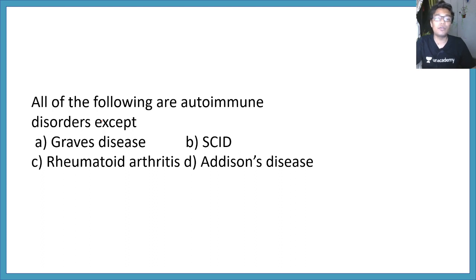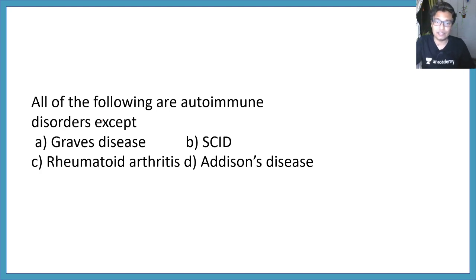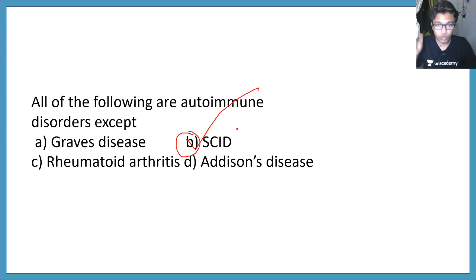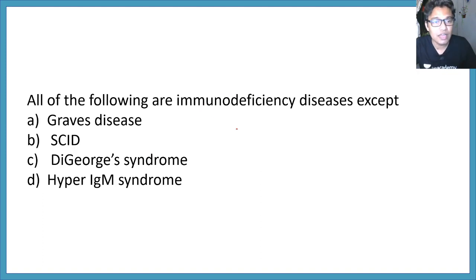All of the following are autoimmune disorders except: Graves' disease, SCID, rheumatoid arthritis, or Addison's disease? The correct answer is option B — SCID, or Severe Combined Immunodeficiency. SCID is not an autoimmune disease; it is actually an immunodeficiency disease. You want to learn more about it? You can get it in the I button.